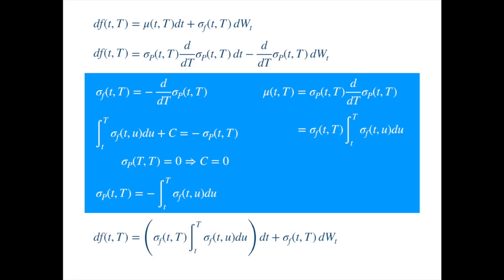So everything is down to the volatility. To build the term structure, you need to get the initial forward and specify the volatility, and the HJM will take care of the rest.